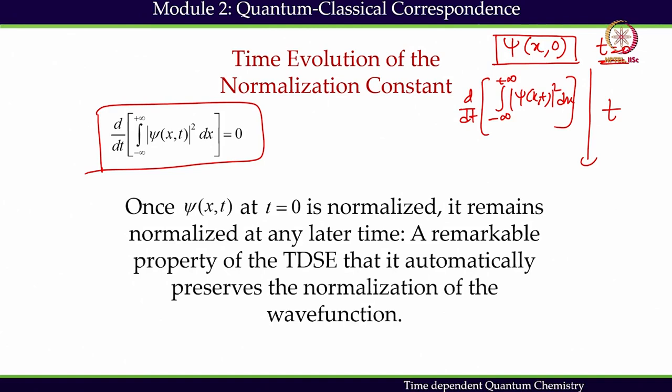Global probability, calculated over the entire space, has to be maintained — it cannot change as a function of time. That is one important requirement of quantum dynamics. Once psi(x,t) at t equals 0 is normalized, it remains normalized at any later time. This is what we are going to prove. This is a remarkable property of the TDSE: it automatically preserves the normalization of the wave function.